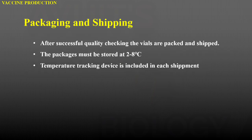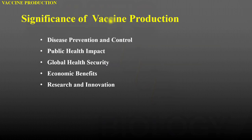The final step is packaging and shipping. After successful quality checking, the vials are packed and shipped. The packages must be stored at 2 to 8 degrees Celsius mainly, and different vaccines require different temperatures. A temperature tracking device is included in each shipment.